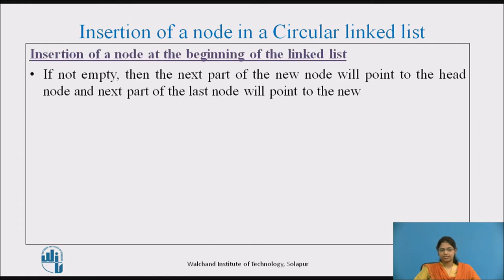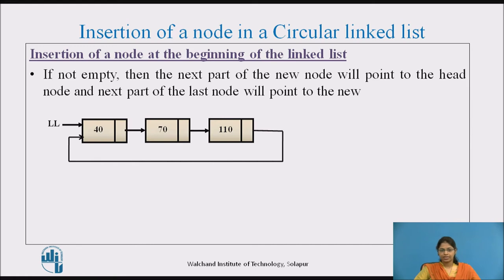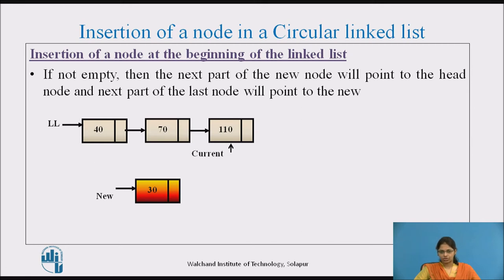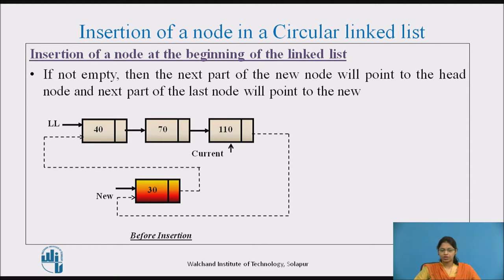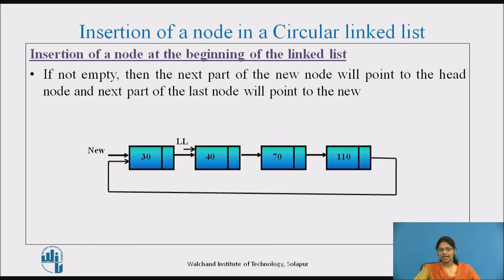If the linked list is not empty, the next part of the new node will point to the head node, and the next part of the last node will point to the new node. We traverse the list until we reach the last node, then make the last node's next point to the new node, and the new node's next point to the head node. Finally, the ll pointer is updated to point to the new node, making it the first node.